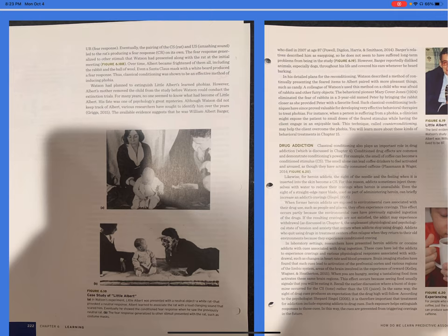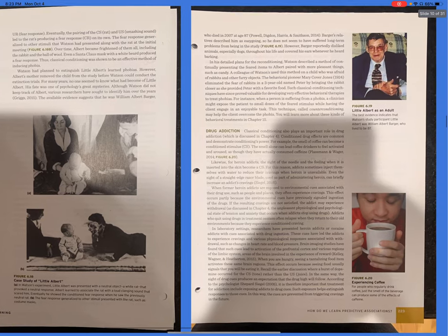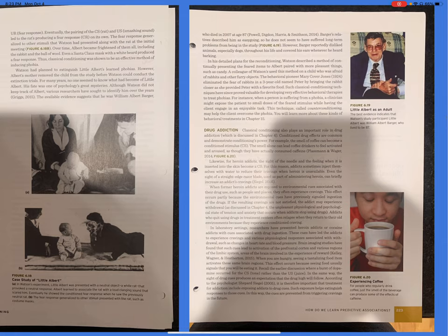Watson had planned to extinguish little Albert's learned phobias. However, Albert's mother removed the child from the study before Watson could conduct the extinction trials. For many years, no one seemed to know what had become of little Albert. His fate was one of psychology's great mysteries. Although Watson did not keep track of Albert, various researchers have sought to identify him over the years. The available evidence suggests that he was William Albert Barger, who died in 2007 at age 87. Barger's relatives described him as easy going, so he does not seem to have suffered long-term problems from being in the study, Figure 6.19. However, Barger reportedly disliked animals, especially dogs throughout his life, and covered his ears whenever he heard barking.